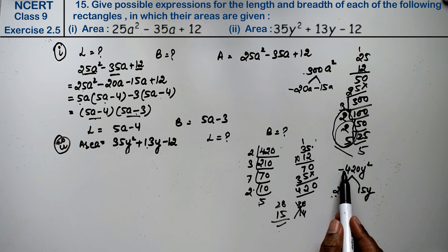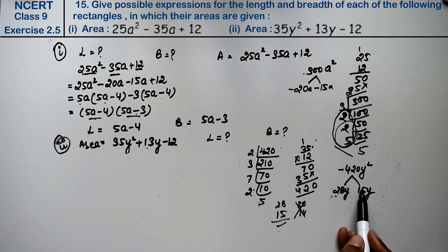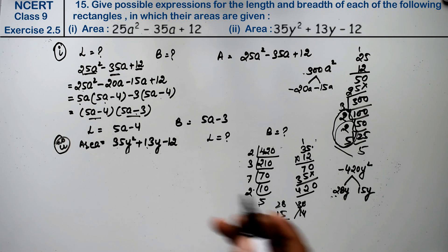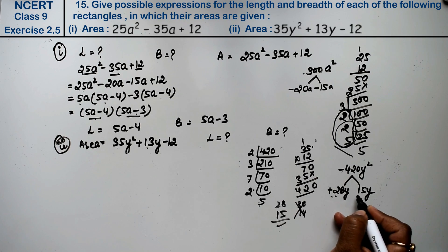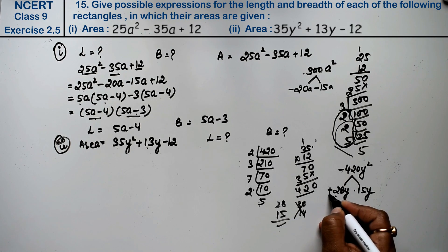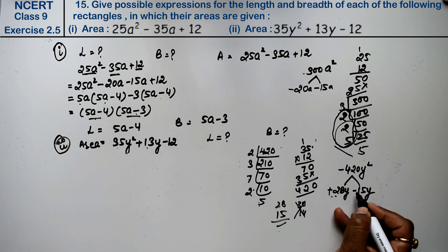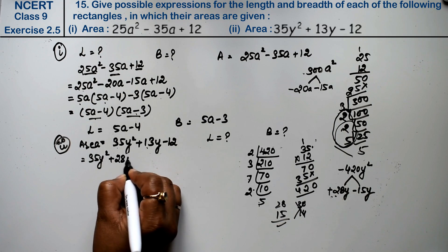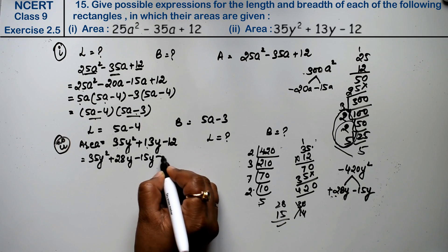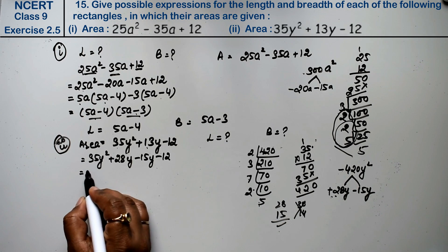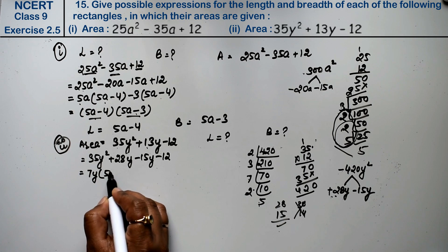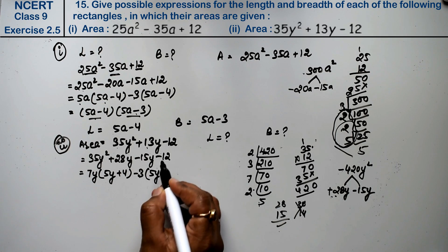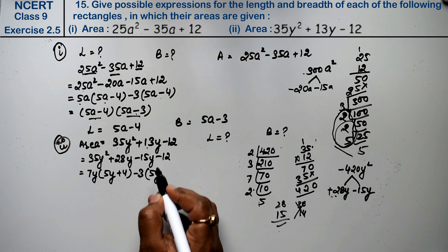Now for the signs: since the middle term is plus and the last term is minus, the bigger factor will be positive and the smaller will be negative. So we write plus 28y and minus 15y. The expression becomes: 35y² plus 28y minus 15y minus 12.